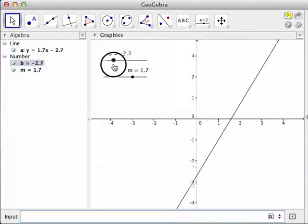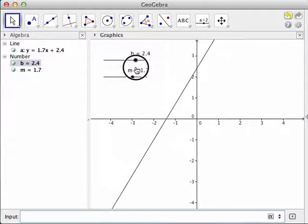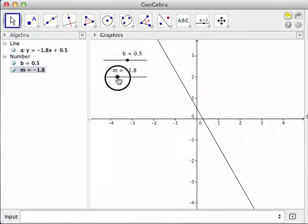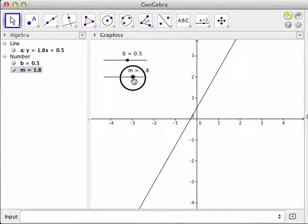So what happens if b is negative? What happens if b is positive? What happens if m is negative? You can ask your students to explore and find the relationship between the values of m and b to the graph. So that's it, thank you.